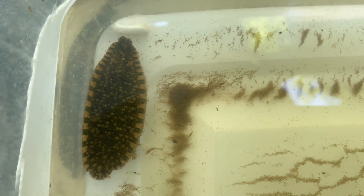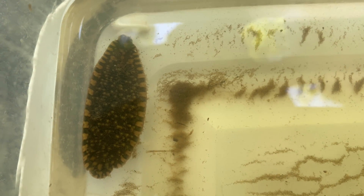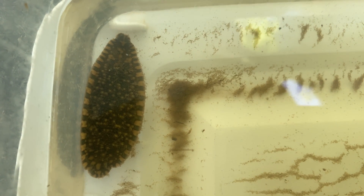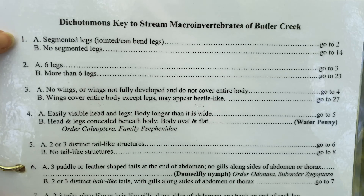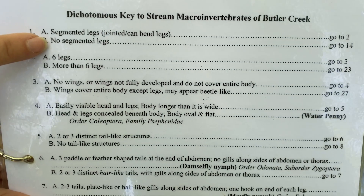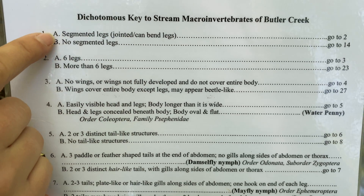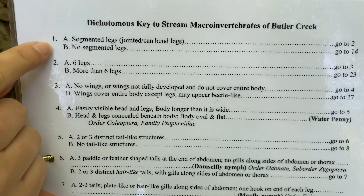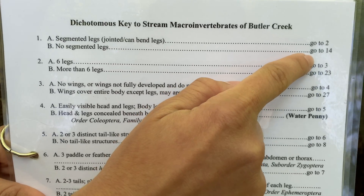We are going to start with this species right here — we have a very large one and a smaller one next to it. This is a specimen you've probably seen on TV but maybe never in real life, and you will be surprised when you find out what it is. We always start at number one: does it have segmented legs or no segmented legs — meaning, do the legs have joints, can they bend? Our bug didn't have any legs, so we say no segmented legs and follow the dots to number 14.